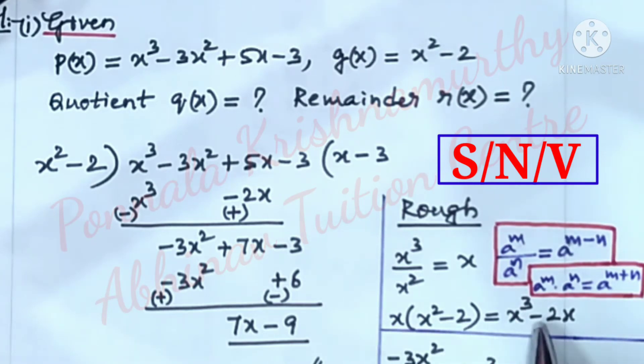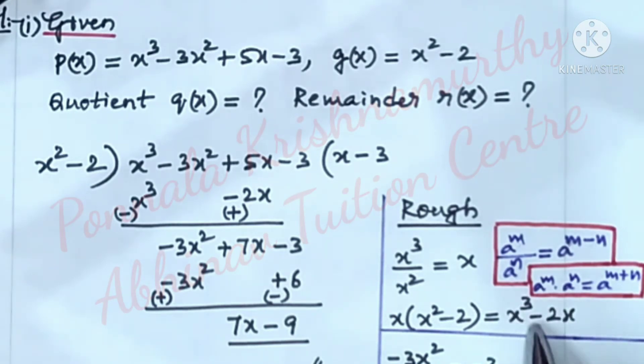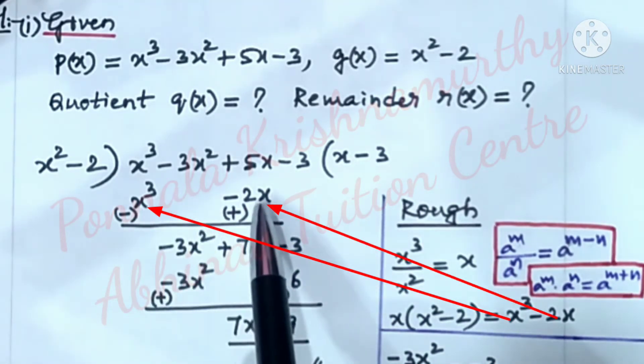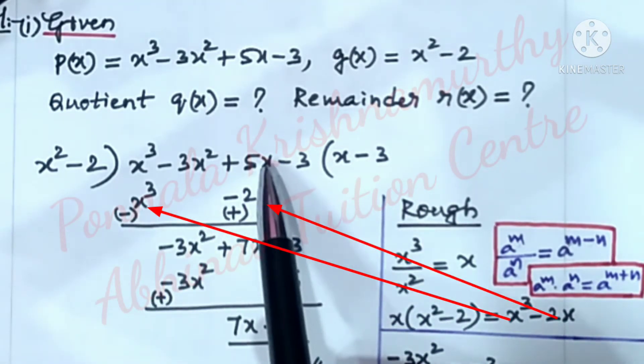Plus into minus is minus. 1 into 2 is 2 and x. So we have x³ - 2x here. This should be written here. x³ - 2x below this expression.